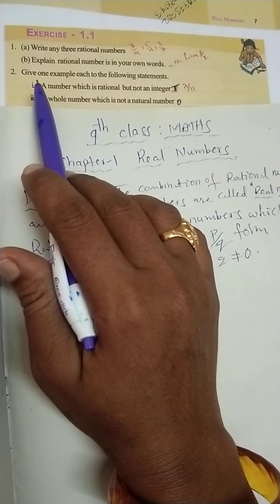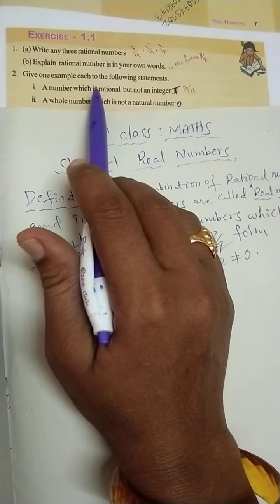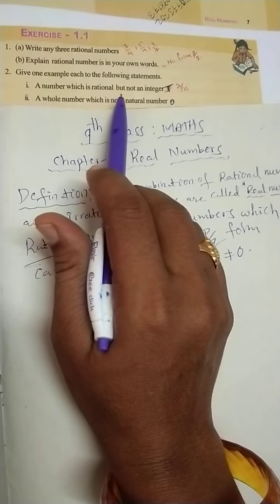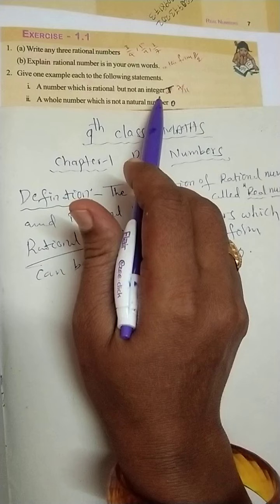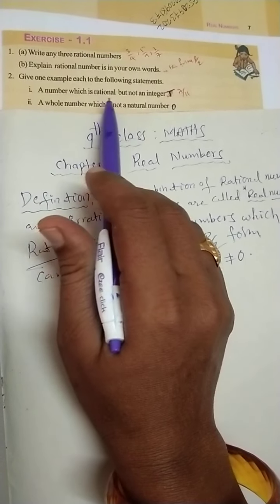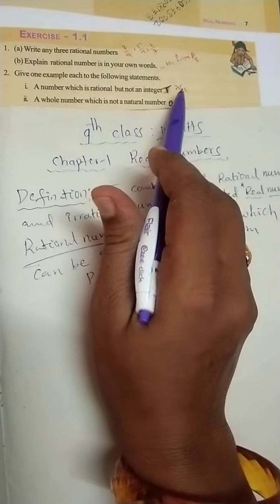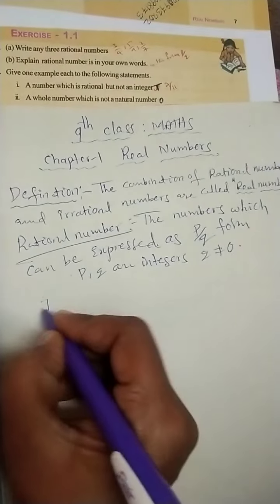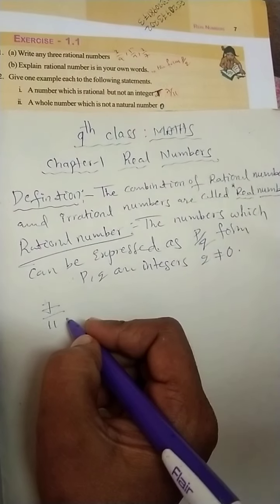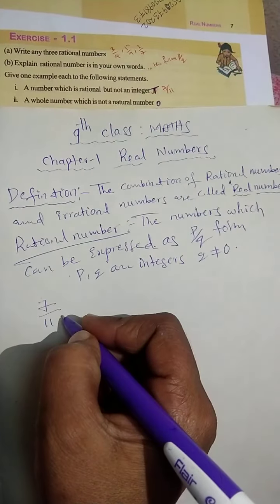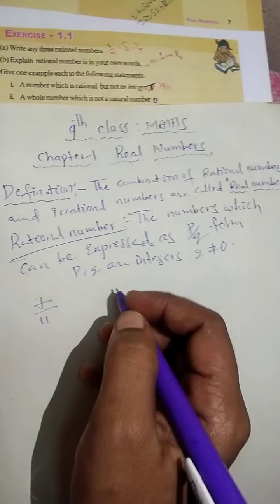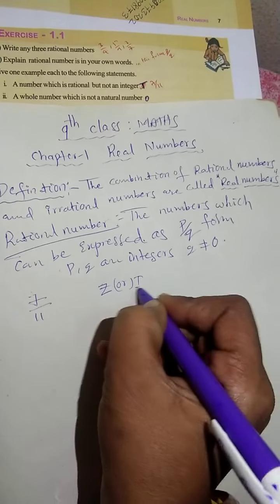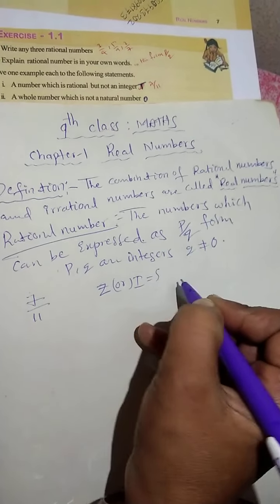Next, second question: give one example each for the following statements. A number which is rational but not an integer. You can take any rational number - suppose 7 by 11. 7 by 11 is a rational number but not an integer.